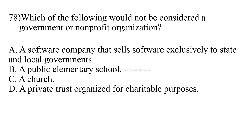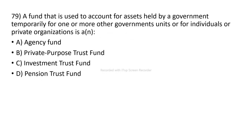Next question: which of the following would NOT be considered a government or non-profit organization? A software company that sells software exclusively to state and local government would still be considered a profit-making institution — it is not a government or non-profit organization. That is the correct answer.